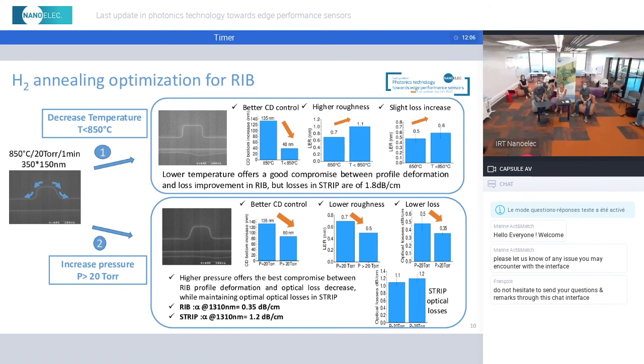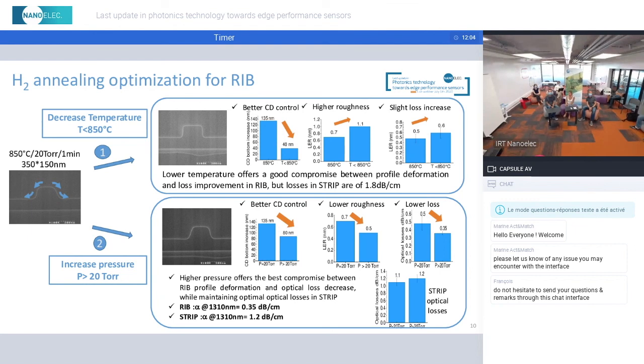What was surprising is that we could also lower the roughness and it leads also to lower loss. In this case, we could obtain 0.35 dB per centimeter loss for the RIB structure. What was good news was that the loss of the strip was also maintained to a low value. So operating at high pressure is quite a good compromise to limit the RIB profile deformation and also to get satisfying loss for RIB and strip architectures.